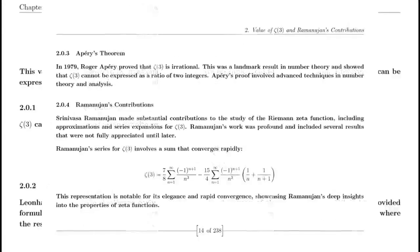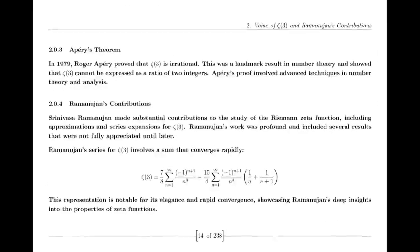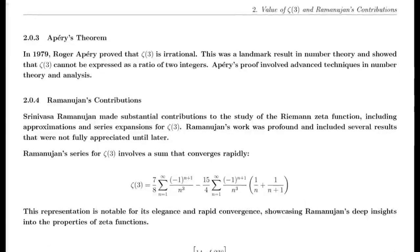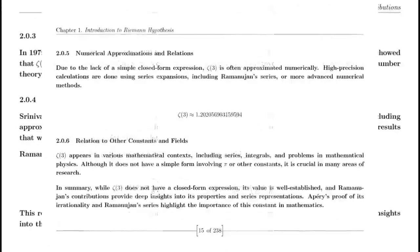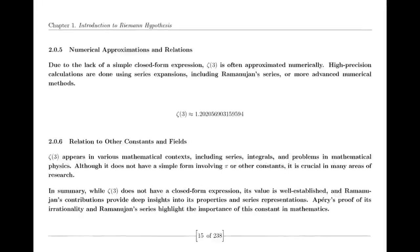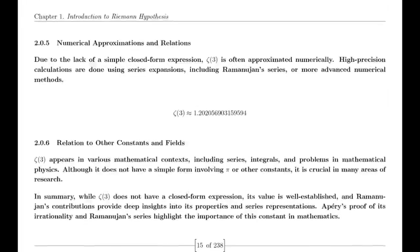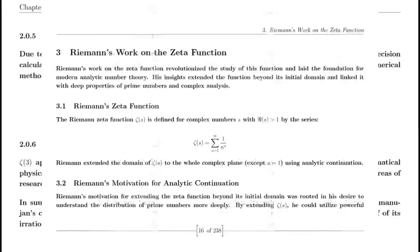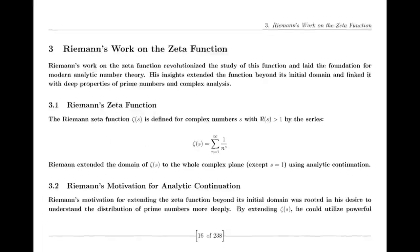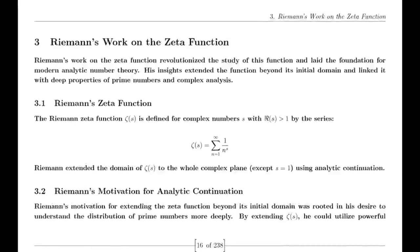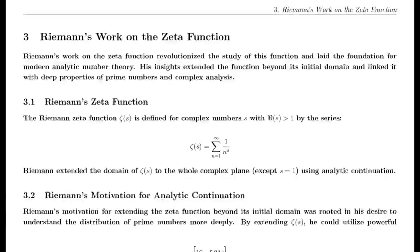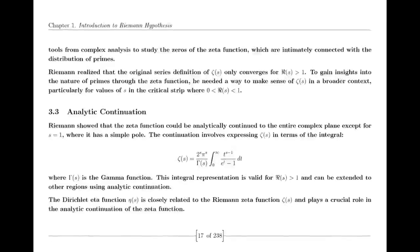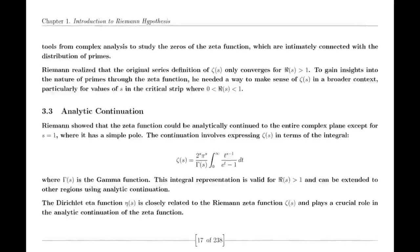Finally, we address the Riemann Hypothesis itself. Riemann proposed that all non-trivial zeros of the zeta function lie on the critical line where the real part of s is one-half. This hypothesis has profound implications for number theory, particularly in understanding the distribution of prime numbers. Despite extensive numerical evidence supporting the hypothesis, a formal proof or disproof remains one of the greatest challenges in mathematics.